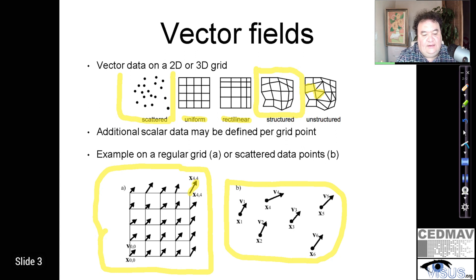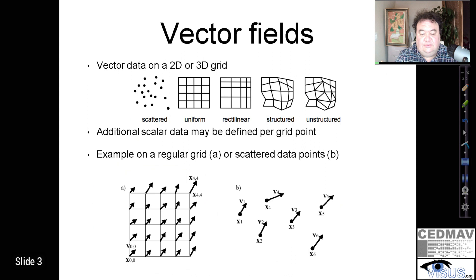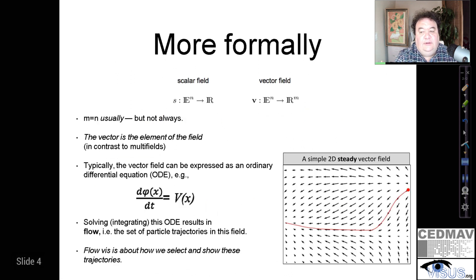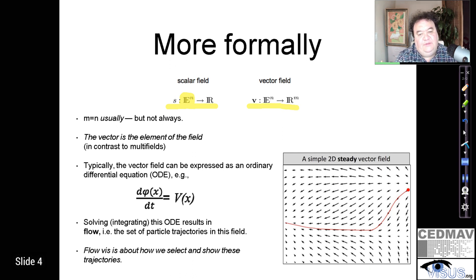The case on the left allows for fairly simple interpolation of the data so that one can find the value of a vector in the middle of a cell, while things are possibly much more complicated in the case of a scattered set of points. If we look at things a little more formally, a scalar field is a map from an n-dimensional domain space to a range of scalar real values — so every location has just one number.